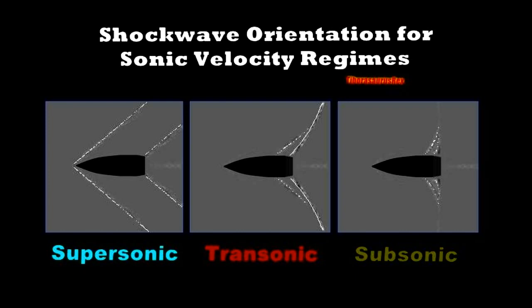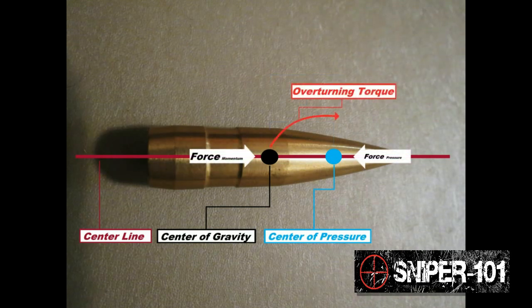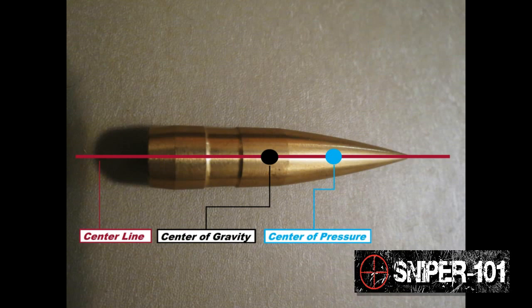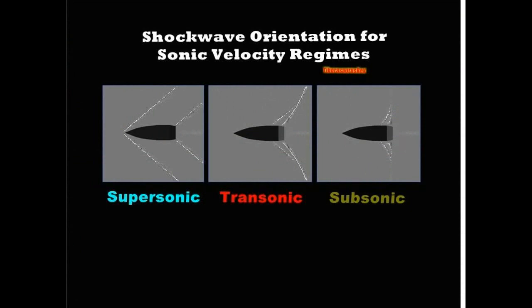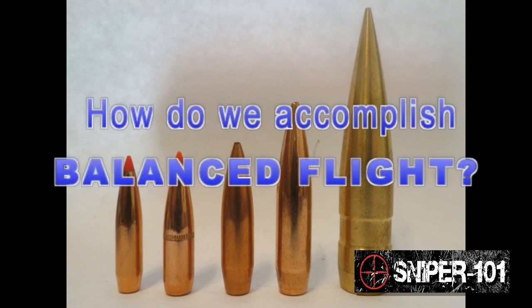As the bullet passes through that transonic zone, if it isn't pointed exactly nose-on with its direction of flight, there will be problems. The center of gravity on a spinning rifle bullet is behind the center of pressure, and it's constantly looking for an opportunity to get in front of it — that's why you spin-stabilize a bullet. Introduce radical turbulence, or shift the center of pressure as happens in the transonic zone, and the center of gravity finds excuses to move forward, causing coning motion and potentially tumbling.